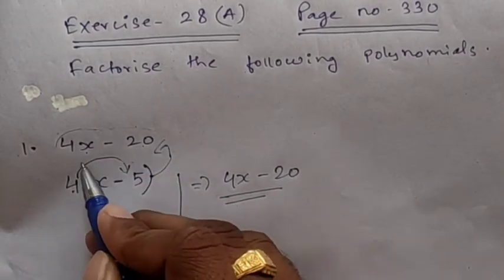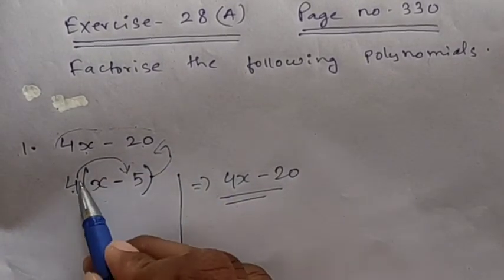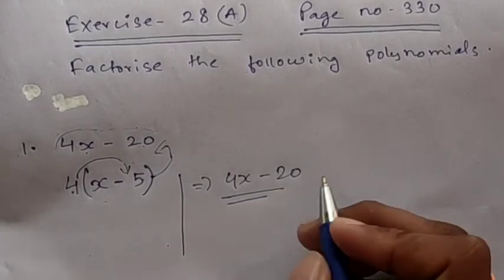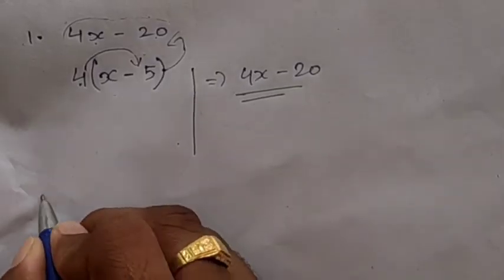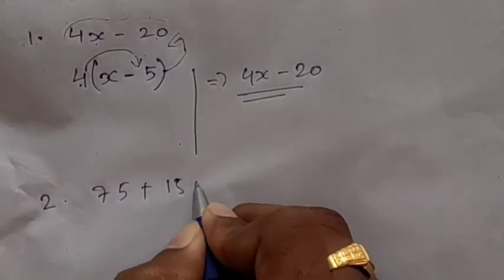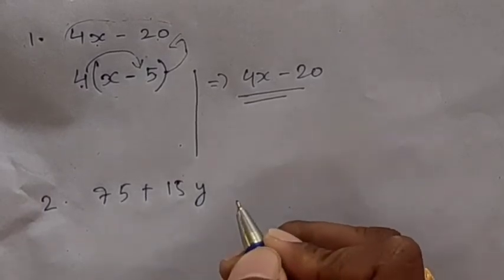So I am writing this expression 4x - 20 in the form 4(x - 5). Clear students? Let us do one more question. Question number 2: 75 + 15y. Clear students?